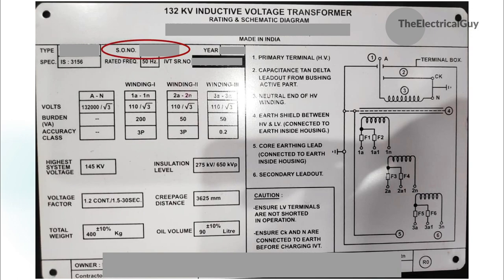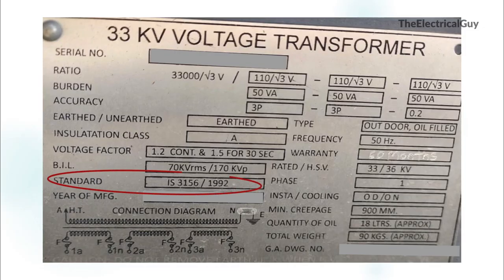SO number is an internal reference number used by the manufacturer. Then year indicates the year of manufacturing. Next is the spec field, also called the reference standard, which indicates the standard to which the equipment conforms. In this case, it is mentioned as IS3156.